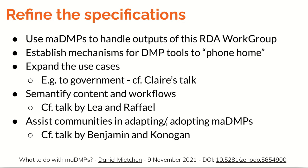As we do this, we should continuously refine the specifications. One way would be to use some machine actionable data management plans to handle the outputs of this Research Data Alliance working group. We could also think about mechanisms by which DMP tools could call home — that is, register themselves or register the outputs written using them in a registry for machine actionable data management plans.